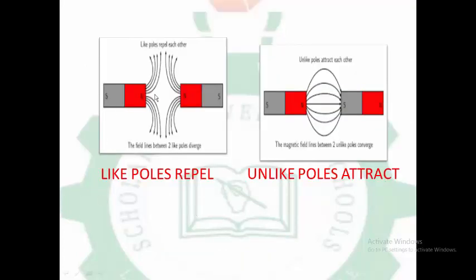The law of magnetism states: North-North poles will repel, South-South poles will repel, but if you put North and South together, they will attract.